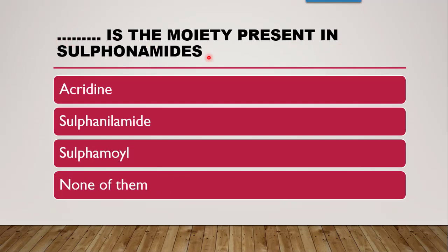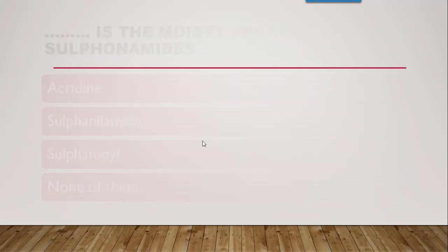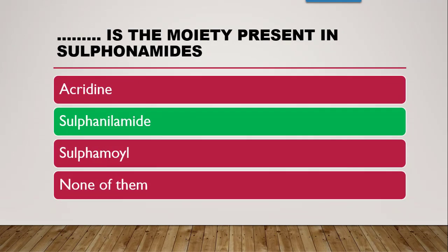Next question: the moiety present in sulfonamides — acridine, sulfanilamide, sulfamoyl, or none? The moiety present in sulfonamides is sulfanilamide, because in IUPAC nomenclature of sulfonamides the suffix 'sulfanilamide' is used — they are all derived from this parent sulfanilamide moiety.